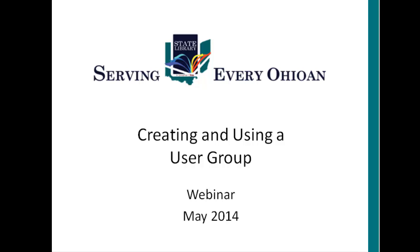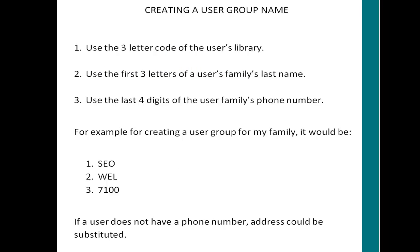The user group name identifies a specific user group responsibility policy. This name is 10 characters or less and may not include any spaces or punctuation except for a dash or underscore. SEO libraries suggest using the following for naming a user group: use the three-letter code of the user's library, use the first three letters of a user family's last name, and use the last four digits of the user family's phone number.